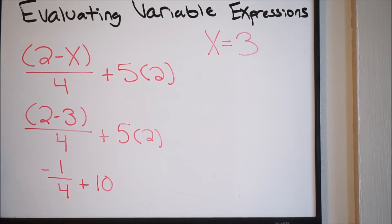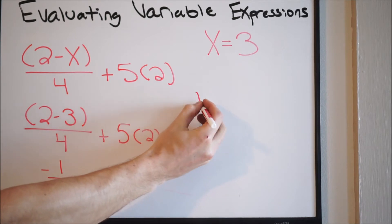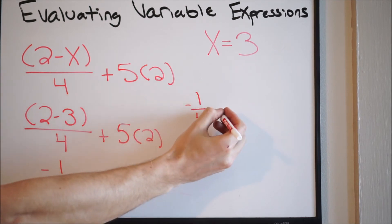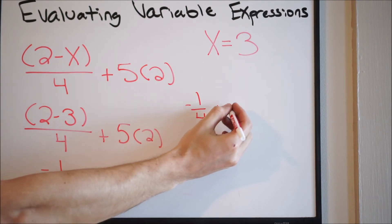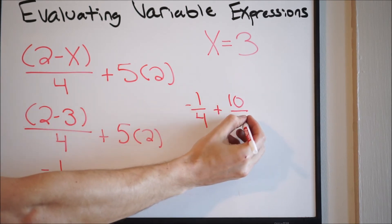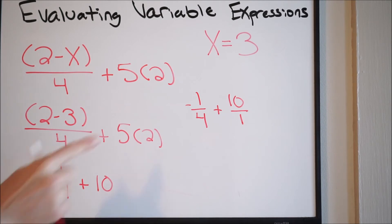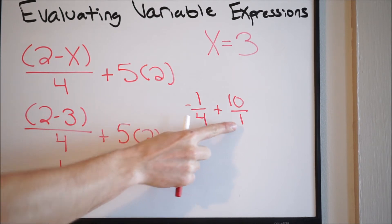We want to go ahead and combine these two terms. We have a fraction, so an easy way to do this — let's rewrite. We have negative 1 over 4, plus 10, which we know is really 10 over 1. We need to get a common denominator, and in order to do that, we're simply going to multiply the denominators.